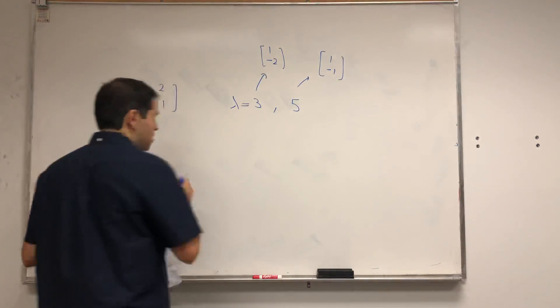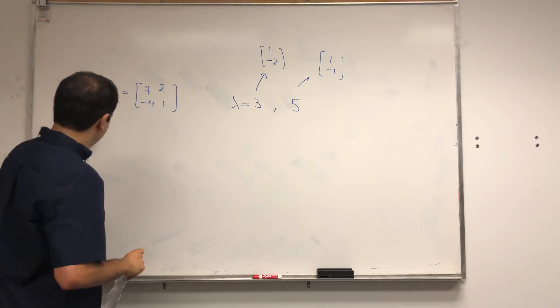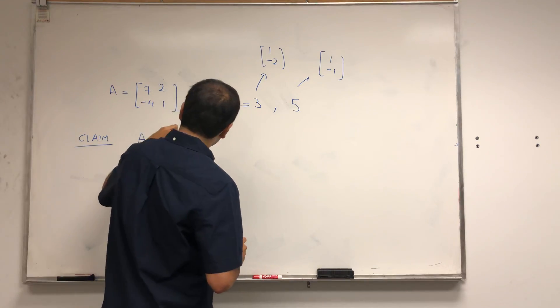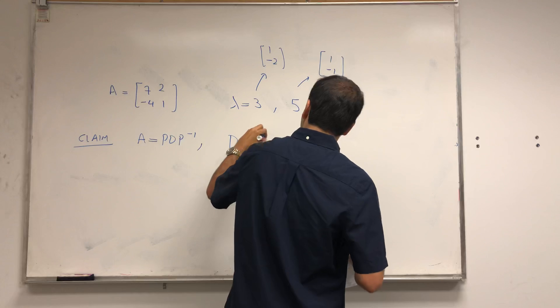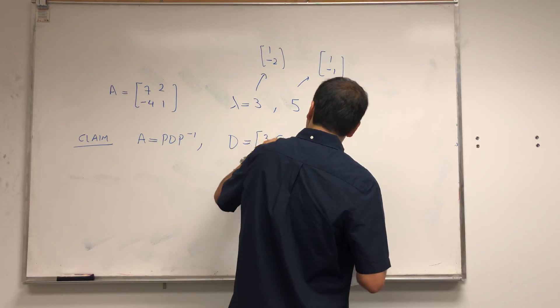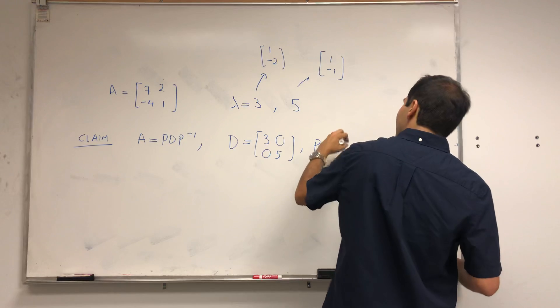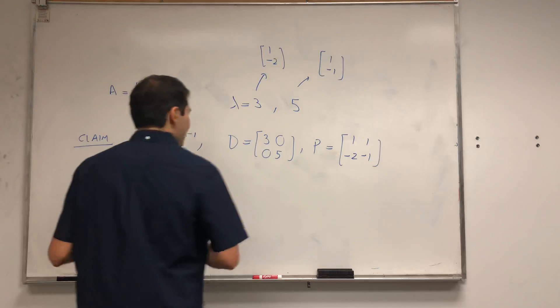First of all, I'm actually claiming that this means A equals PDP inverse, where D is the diagonal matrix of eigenvalues, and P is the corresponding matrix of eigenvectors. So [1, -2; 1, -1].